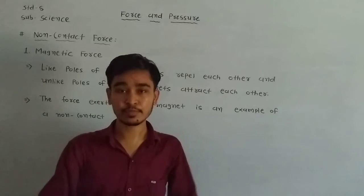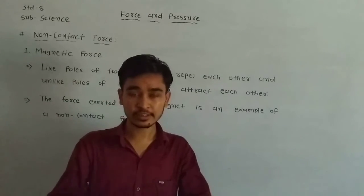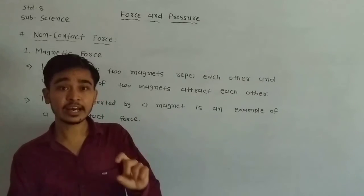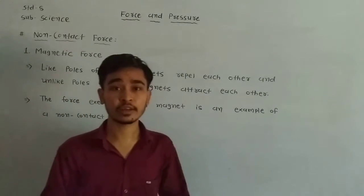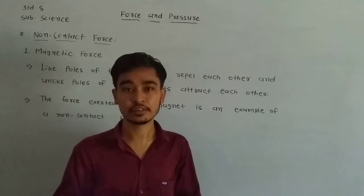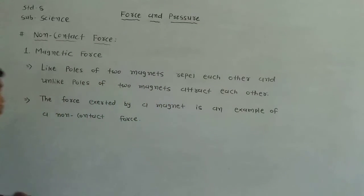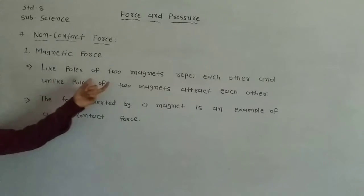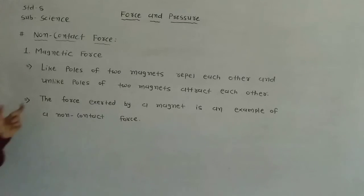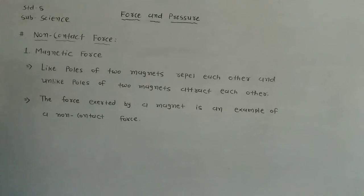We are not able to make the magnets contact each other — the force acts without contact. That means the magnetic force is a non-contact force. Like poles of two magnets repel each other, and unlike poles of two magnets attract each other. The force exerted by a magnet is an example of a non-contact force.